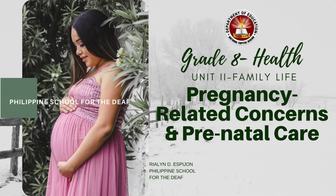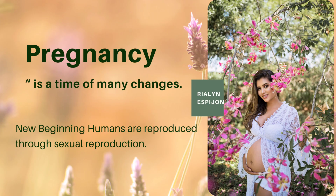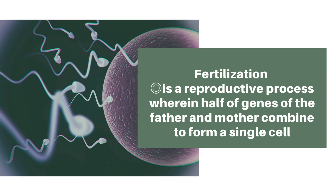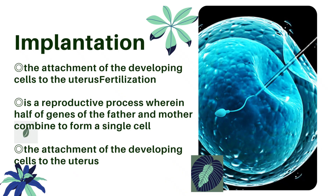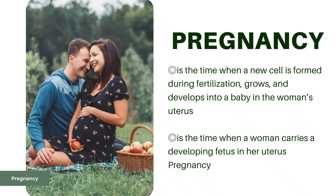Health 8, Unit 2: Family Life — Pregnancy-related concerns and prenatal care. Pregnancy is a time of many changes and new beginnings. Humans are reproduced through sexual reproduction. Fertilization is a reproductive process wherein half of the genes of the father and mother combine to form a single cell. Implantation is the attachment of the developing cells to the uterus. Pregnancy is the time when a new cell formed during fertilization grows and develops into a baby in the woman's uterus.